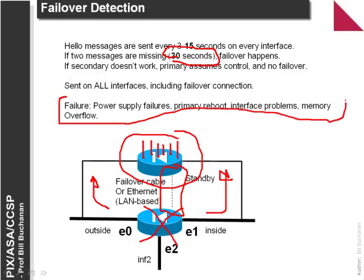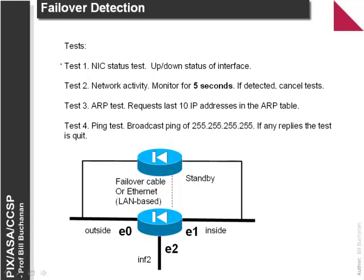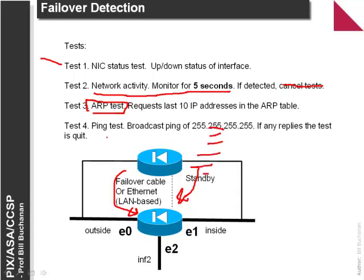Causes of failover include power supply failures, primary reboot, interface problems, and memory overflow. The test performed includes a network interface test pinging each port to see if they're still alive, then monitoring for network activity for about five seconds — if activity is detected it cancels all tests. Next it does an ARP test requesting the last 10 IP addresses from the ARP table. Finally it does a ping test with a broadcast, and if all of these fail, the secondary takes over.